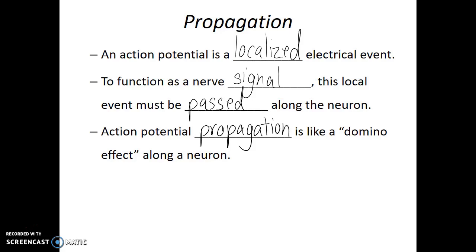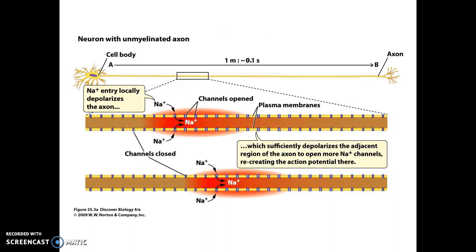Action potential propagation occurs because sodium ion channels open for a brief period, then close and become unresponsive. Sodium ion channels will open when neighboring areas of the plasma membrane become depolarized. In essence, this is a domino effect: some sodium channels open, sodium ions rush in changing the electrical polarity, which opens the next set of sodium channels, and more sodium ions rush in, opening the next set. Those channels then close and become unresponsive, allowing the cell to return to its resting potential.